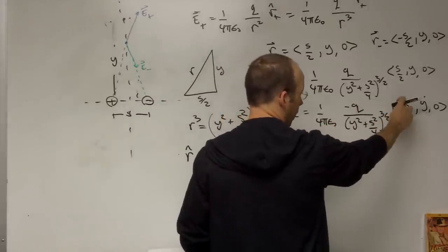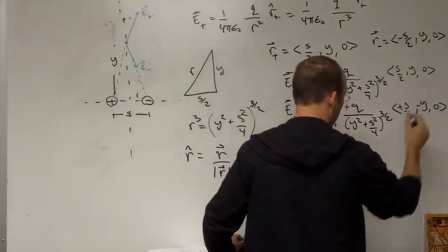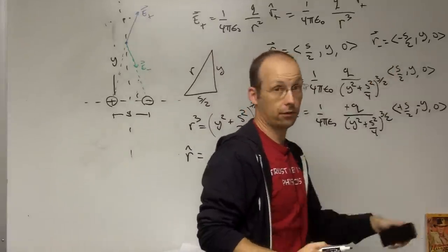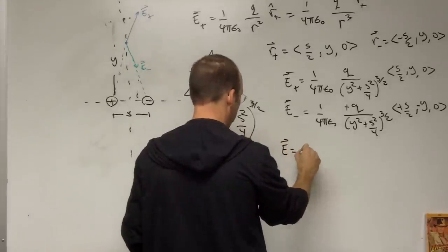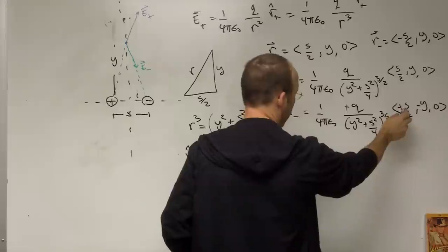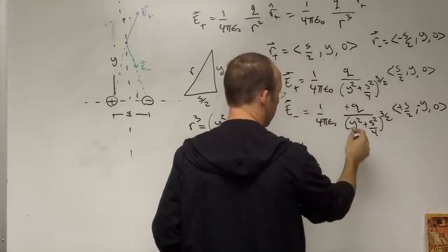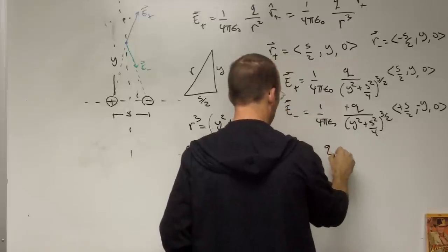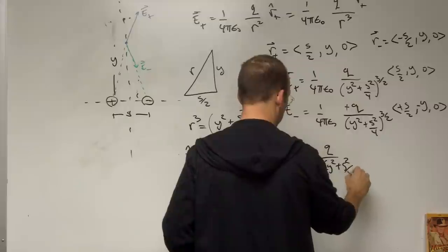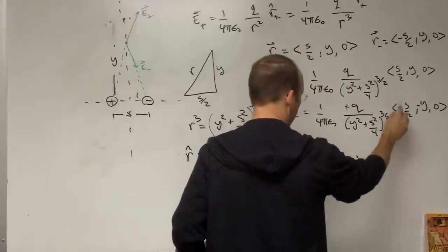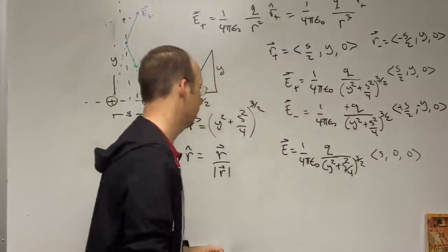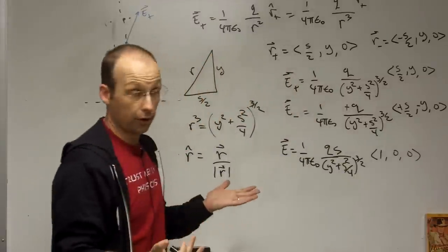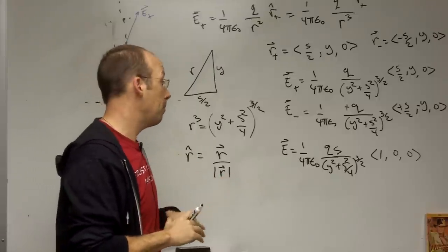To add E+ and E-, I factor out the negative sign so the prefactors match. Adding the vectors: the x-components give s/2 + s/2 = s, while the y-components cancel. The total electric field is therefore E = one over four pi epsilon naught, times qs over (y squared plus s squared over 4) to the three-halves, in the x-hat direction.